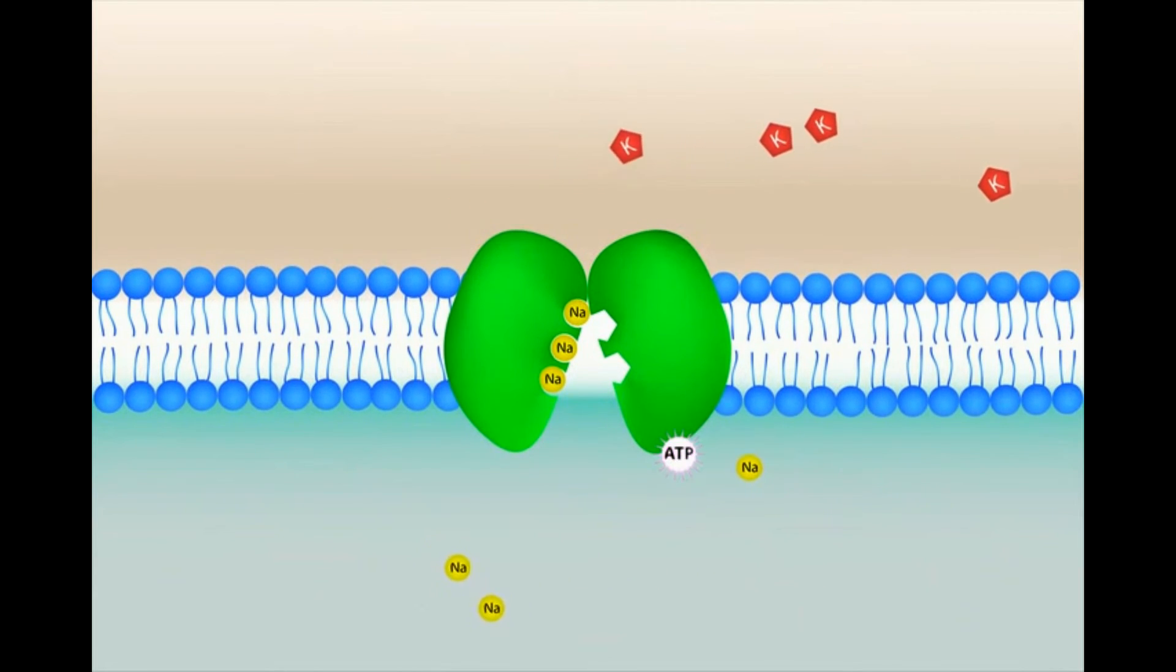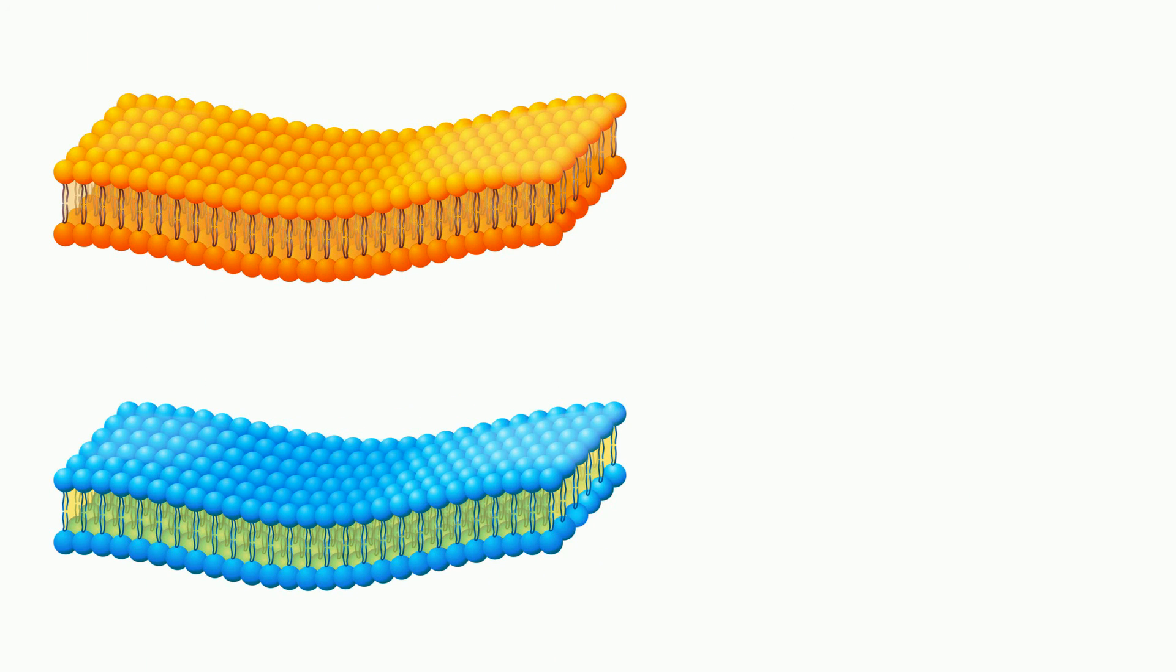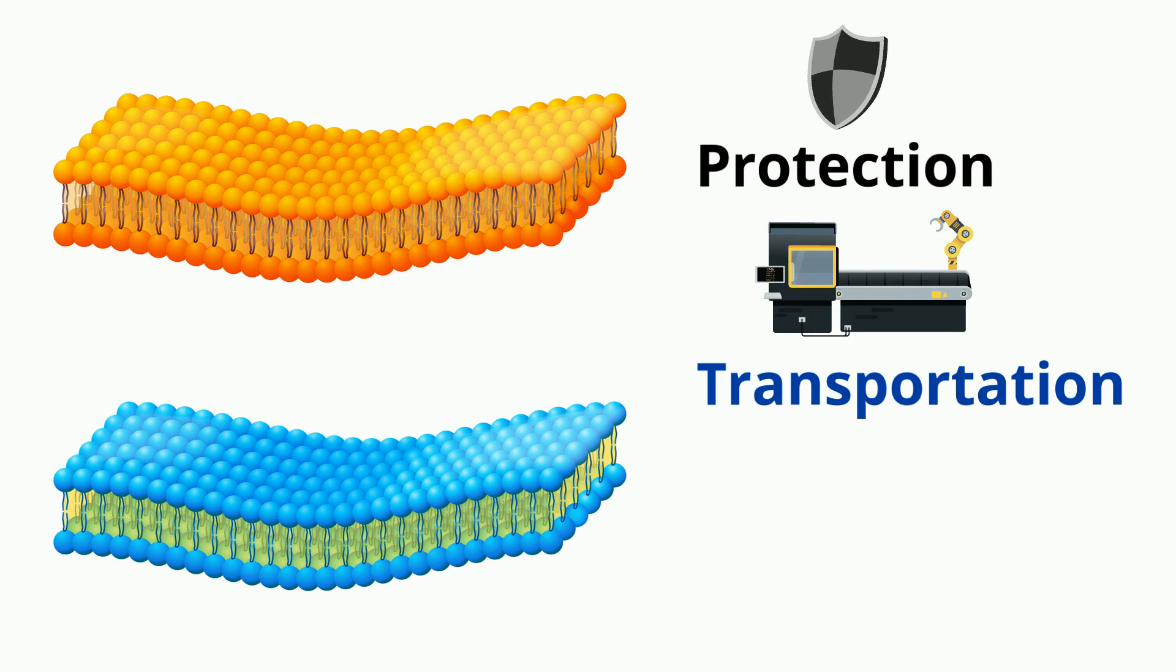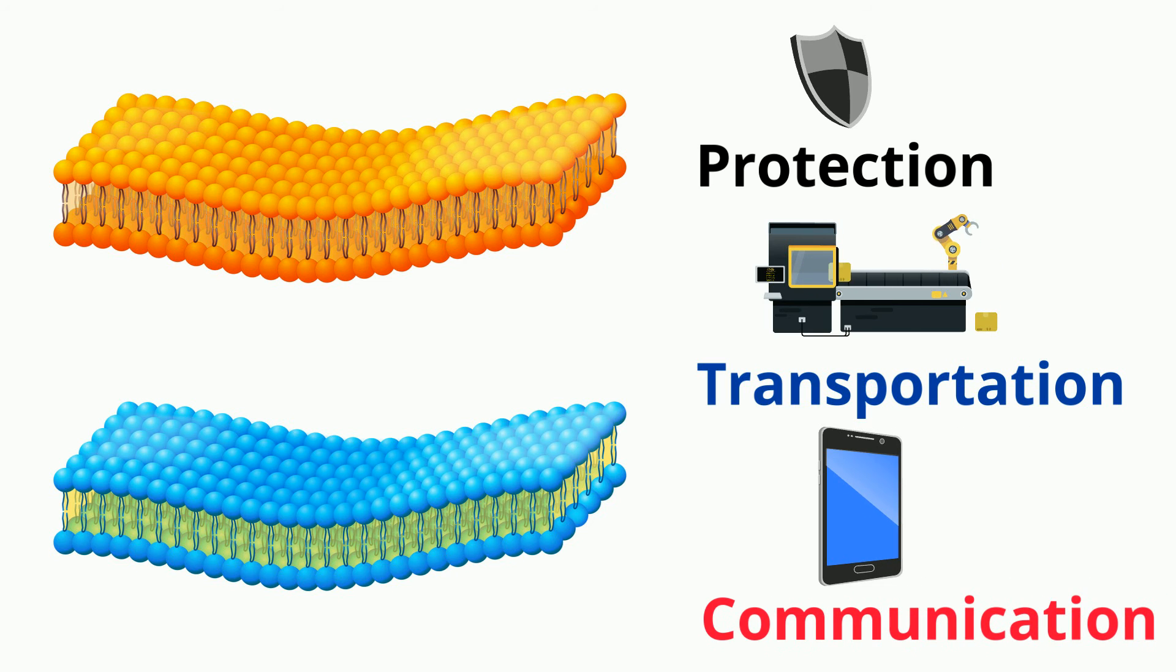So, in summary, the cell membrane protects the cell, is used for transportation of moving important objects in and out, and also communicates with other cells.